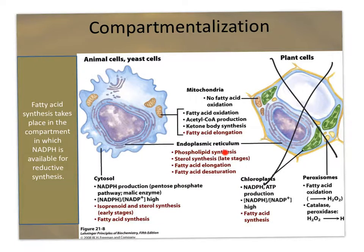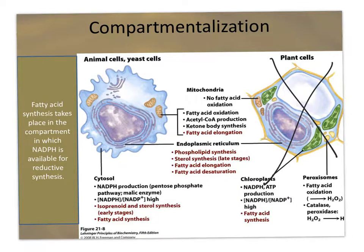I don't think your book calls it that, but that's my word for it. Where they desaturate it — what are they putting in if they're desaturating it? Double bonds. And remember, the naturally occurring ones are all cis double bonds. You can also make phospholipids and things like that, and it's occurring in the ER.